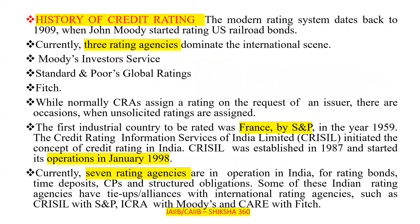The modern rating system dates back to 1909, when John Moody started rating US railroad bonds. Currently, three rating agencies dominate the international scene: Moody's Investor Service, Standard and Poor's Global Rating, and Fitch. While normally credit rating agencies assign a rating on the request of the issuer, there are occasions when unsolicited ratings are also assigned.